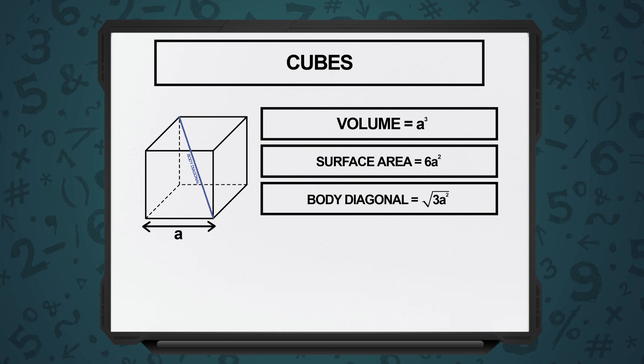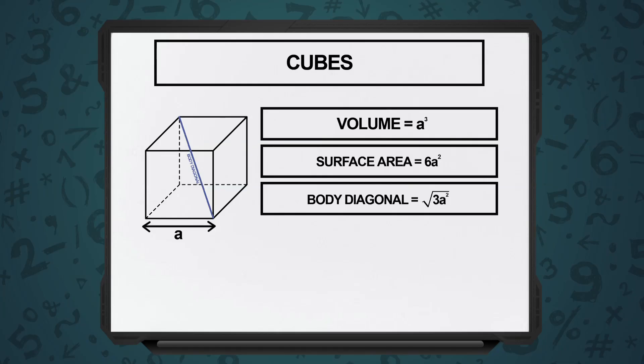Such a line is known as the body diagonal. So, the length of the body diagonal of a cube is under root 3a square. Thank you.